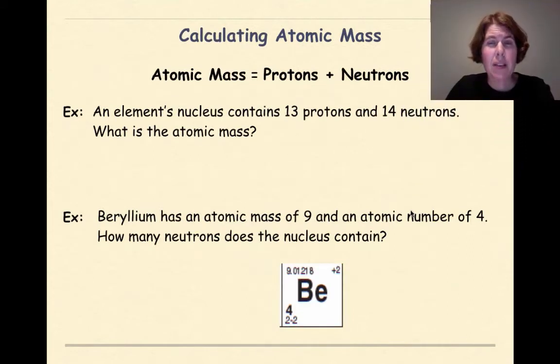Calculating atomic mass. Atomic mass is composed of protons and neutrons, because that's where the mass of the atom is located inside the nucleus. So when you calculate atomic mass, you're going to find the mass of the protons and add them to the mass of the neutrons. Let's look at an example. An element's nucleus contains 13 protons and 14 neutrons. What is the atomic mass?